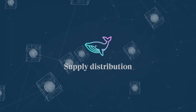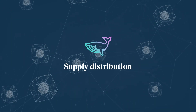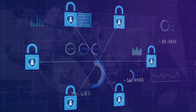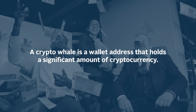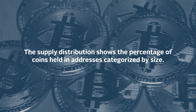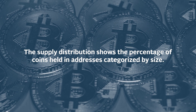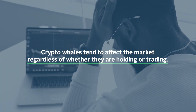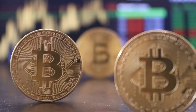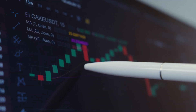The third metric that can give us a good idea of the health of a network is supply distribution. We've briefly touched on this — a network that has a handful of whales may not be the best representation of a healthy network. Whales are basically individuals or institutions that hold a large number of coins. The supply distribution shows the percentage of coins held in addresses categorized by size. It's an important metric since whales tend to affect the market regardless of whether they are holding or trading. If they decide to hold their coins, it creates scarcity; if they are actively trading, they would create volatility in the market.